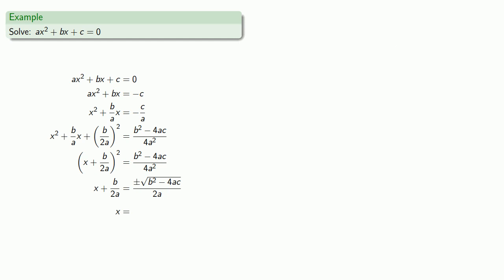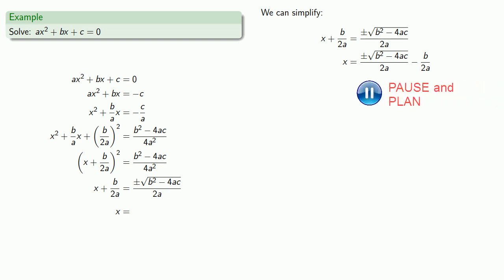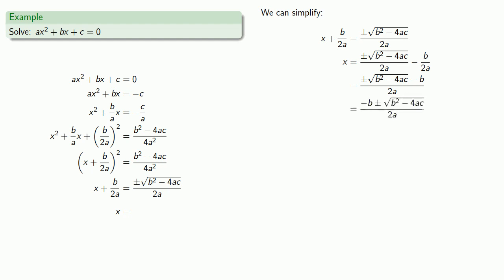Finally, to solve for x we subtract b over 2a from both sides. The two fractions already share the same denominator, so we can just subtract the numerators. And while we might write this as plus or minus square root minus b, we conventionally move the minus b to the front.